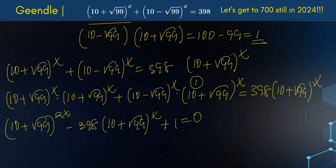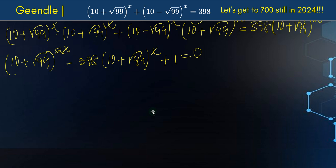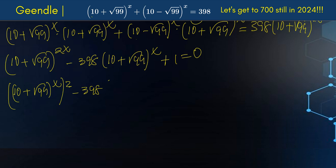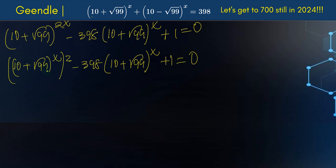We can make a substitution here, but I'm not going to. Instead I'll write this as (10 + √99)^x all squared, minus 398 · (10 + √99)^x, plus 1 equals 0. You can make a substitution if you want, but I think it's cleaner not to — we'll get to the solution faster. This is a quadratic equation in terms of (10 + √99)^x.